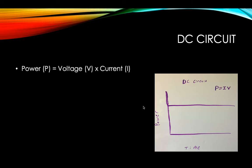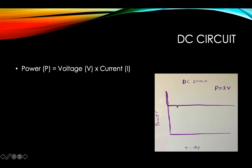When talking about RMS values, it's important to understand the difference between a DC and an AC circuit — a direct current or an alternating current circuit. Here pictured in this drawing, we have a power over time axis in a direct current circuit. In a direct current circuit, power is equal to current times voltage, and because the current and voltage are constant, the power remains constant over time.